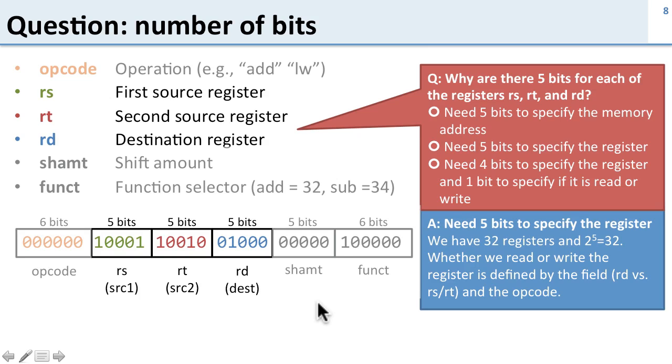We don't need a special bit to specify whether we read or write because we know that based on the field. These two fields are the two source registers, so we know we're going to read these values. And this is the destination register, so we know we're going to write to that value.